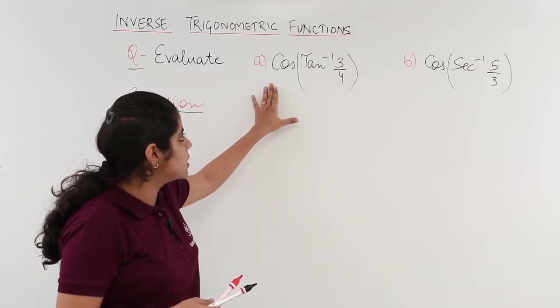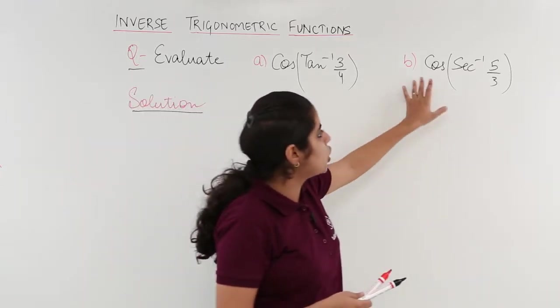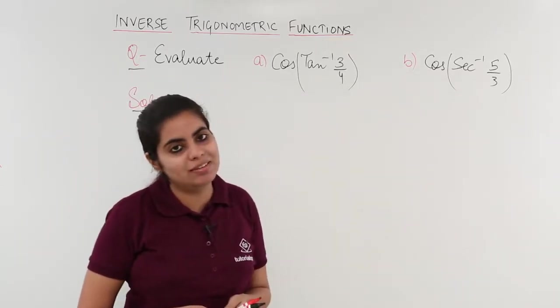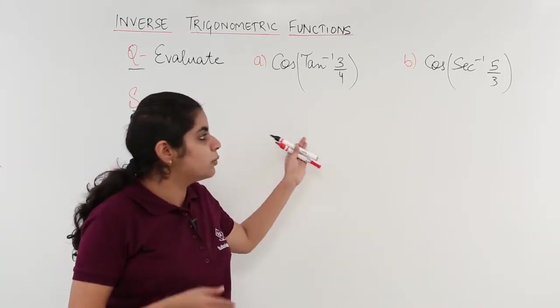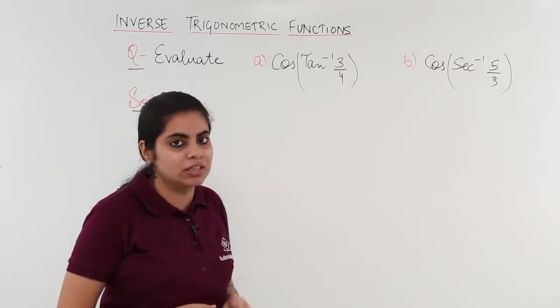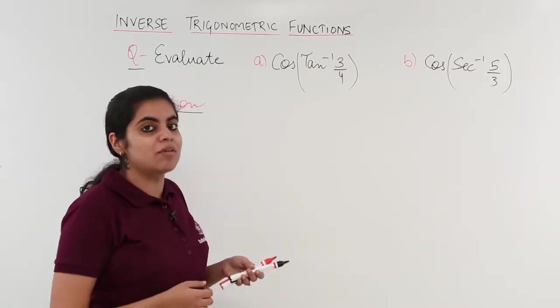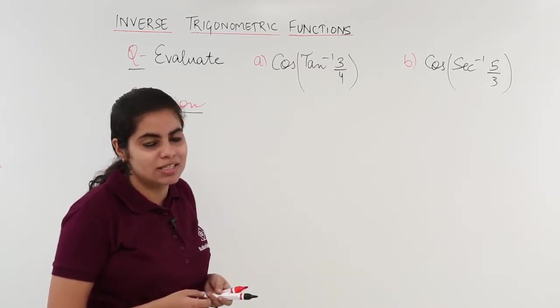Evaluate cos(tan⁻¹(3/4)) and the second part is cos(sec⁻¹(5/3)). For those who have already watched the previous video, this question can be solved by pausing the video on your own, do it and then recheck the answer. For those who haven't watched, let's see what the question has to say and how it gets solved.